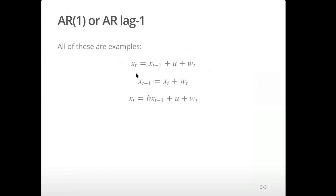The classic form of these state space models is a lag-one model. You could have longer lags, but it's really, really common in these models to just have a lag one. That means the value at time t is a function of t minus one. You might see this written as t plus one is a function of t — it's still lag one.